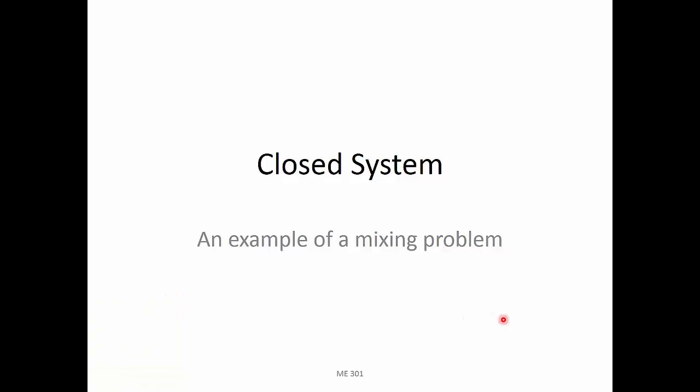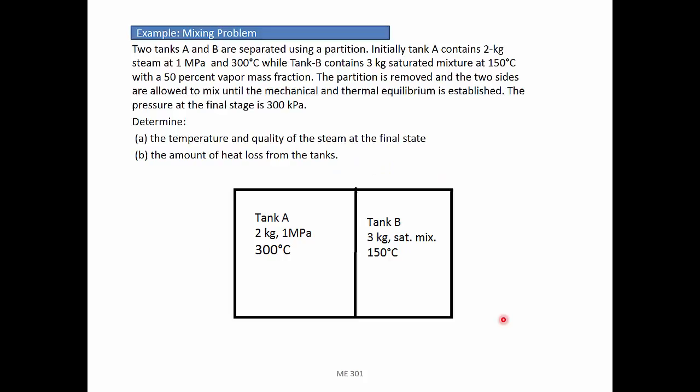Let's take a look at an example of how to solve a mixing problem. Two tanks A and B are separated using a partition. Initially, tank A contains 2 kg of steam at 1 MPa and 300 degrees C.